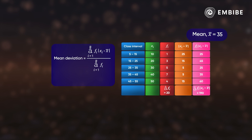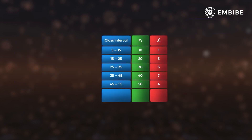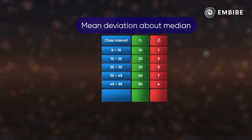The sum of fᵢ × |xᵢ − x̄| is 190 and the sum of fᵢ's is 20. Finally, the mean deviation is the sum of these products divided by the total frequency, that is 190 ÷ 20, which equals 9.5.